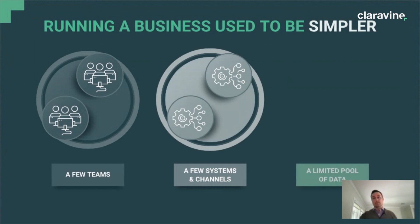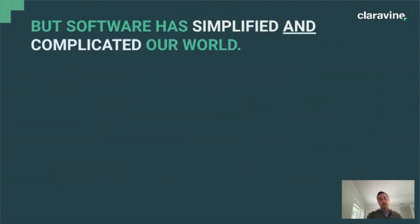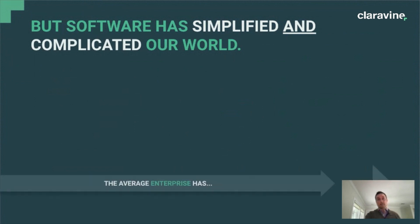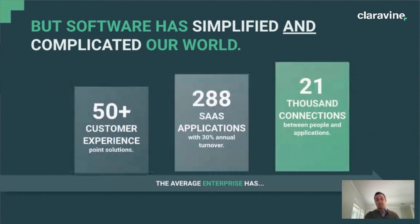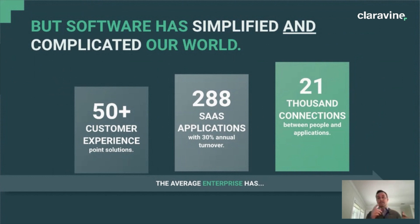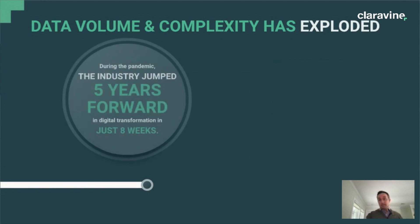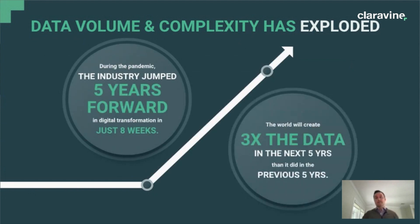You used to have a few systems and channels and a limited pool of data. But now, look at what software has done to the marketing industry and the enterprise in general. The average enterprise has 50 or more customer experience solutions in their marketing organization, 288 SaaS applications enterprise-wide, and over 21,000 connection points and touch points across people, teams, and applications.